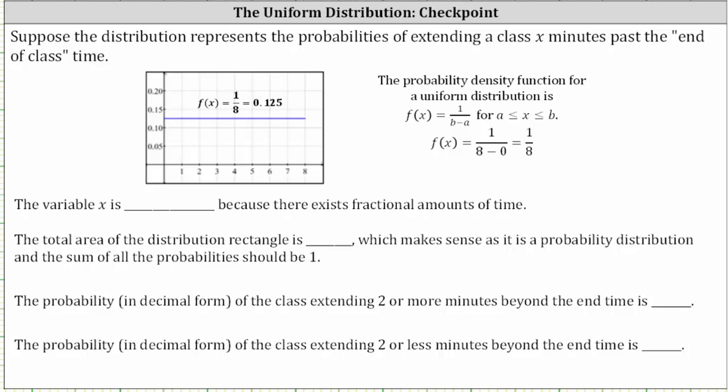Suppose the distribution represents the probabilities of extending a class x minutes past the end of class time. Looking at the distribution, notice how the probability density function is a horizontal line, which indicates we have a uniform distribution.